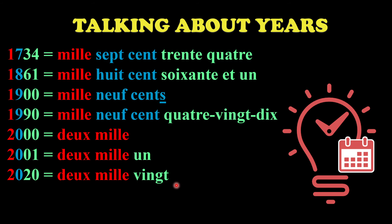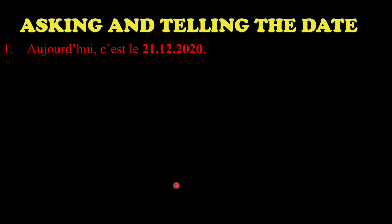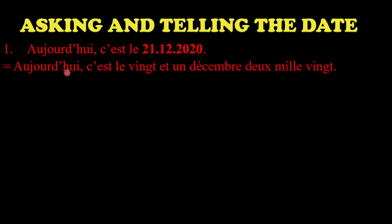Now let's take some examples of full sentences. 'Aujourd'hui c'est le' - and the date given is 21st December 2020. You write 'aujourd'hui c'est le 21 décembre deux mille vingt.' You write the number 21, then the month 'décembre' with a small 'd', then the year 2020: take the 2000 first, no hundreds so you ignore it, then the last two digits give 'vingt.'